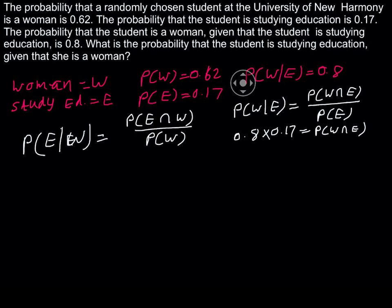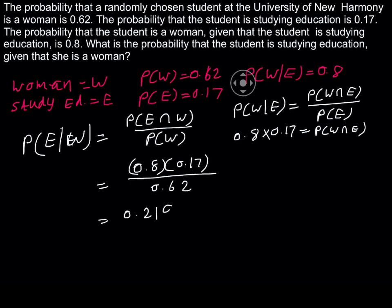We can plug these numbers in: 0.8 times 0.17, divided by the probability of W which equals 0.62. The answer is 0.219. So P(E | W) equals approximately 0.219.